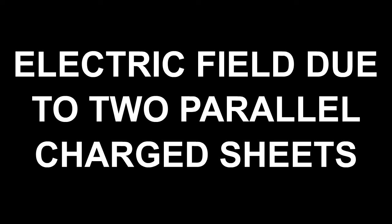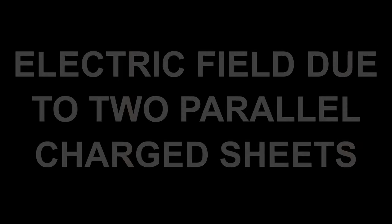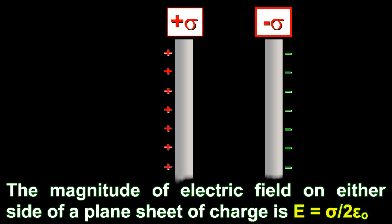Electric field due to two parallel charged sheets with equal and opposite charge densities, +σ and -σ, as shown in the figure. The magnitude of electric field on either side of a plane sheet of charge is E = σ/(2ε₀).